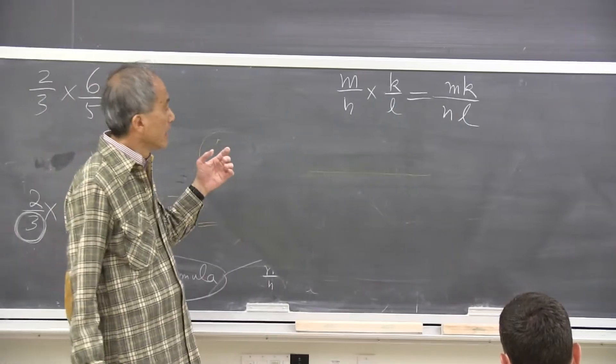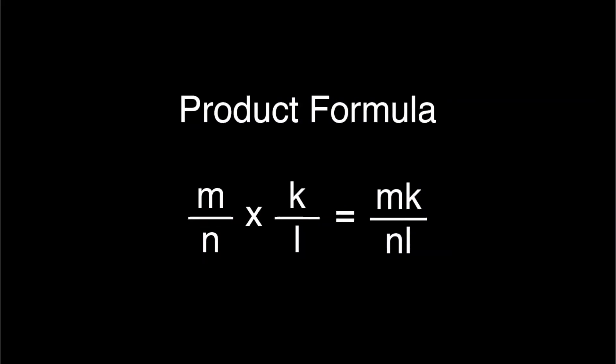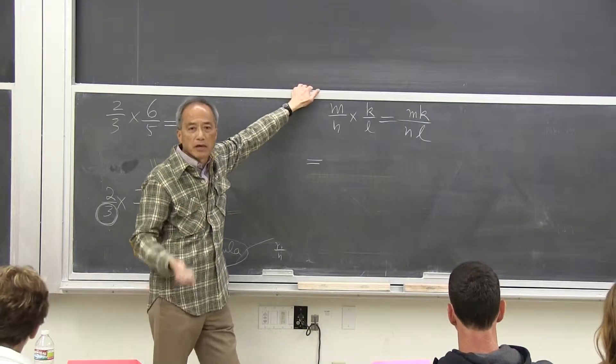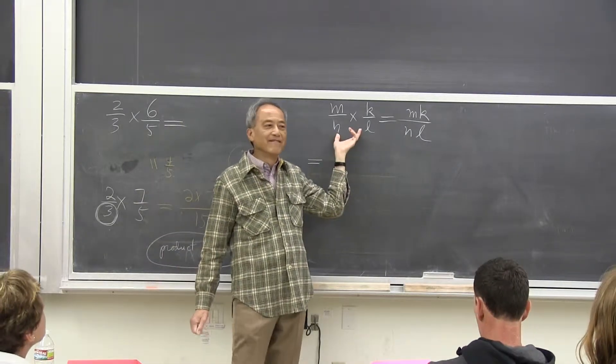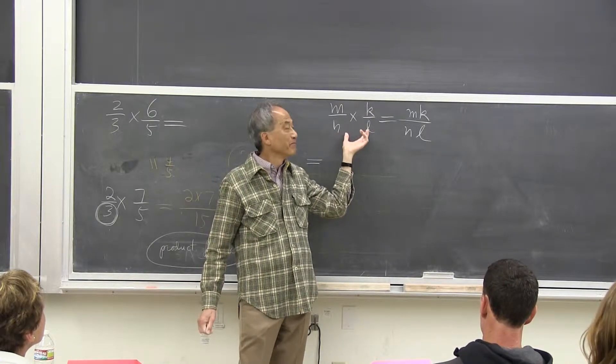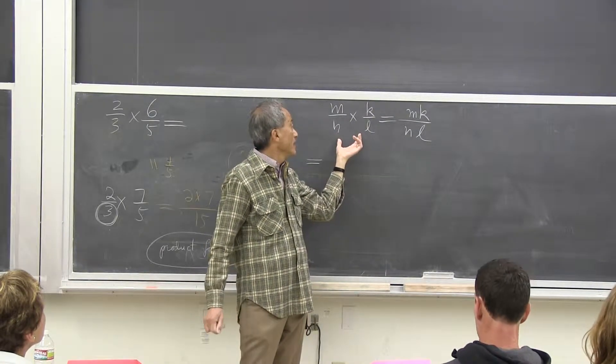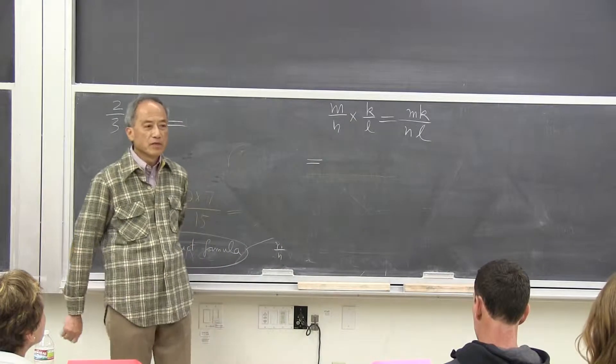Because what? I haven't written it down, but you can find it in the notes. What does this mean? Can someone try? M over N times K over L? What is it?